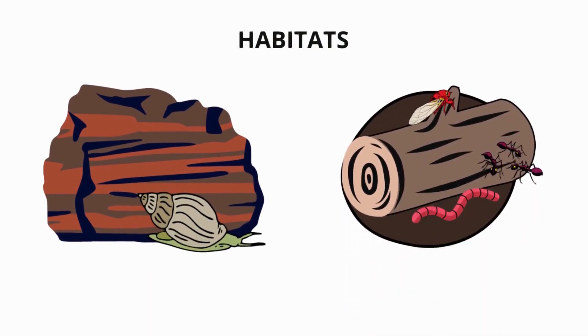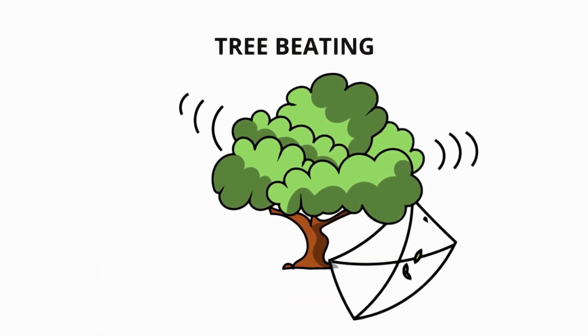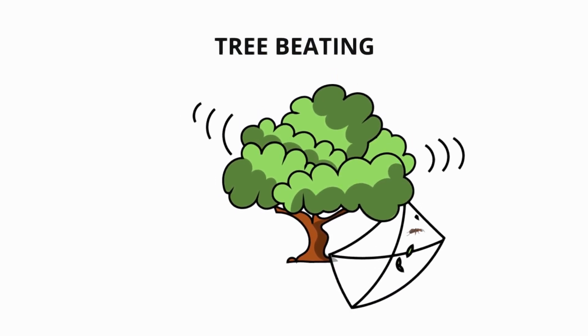One way to observe invertebrates is by using tree beating. You gently hit a tree with a stick causing the insects and other invertebrates to fall onto a white sheet or tray placed below the tree. You can then use a magnifying glass to observe the invertebrates closely and identify them.